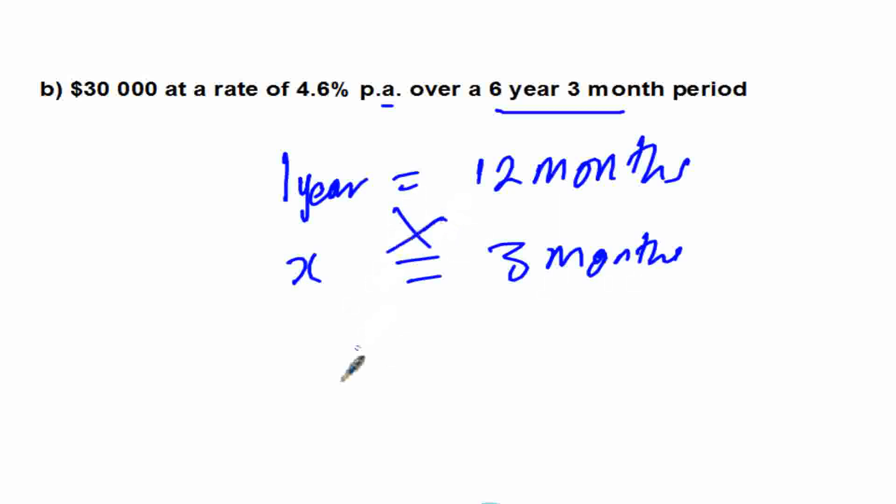So how many years will be in 3 months? If we do some cross multiplication, we shall be having 3 = 12x. We multiply this times this and that times that, so our x = 0.25 when I divide both sides by 12. So I add this 0.25 to the 6 years. These are years, so we have the number of years to be 6.25.